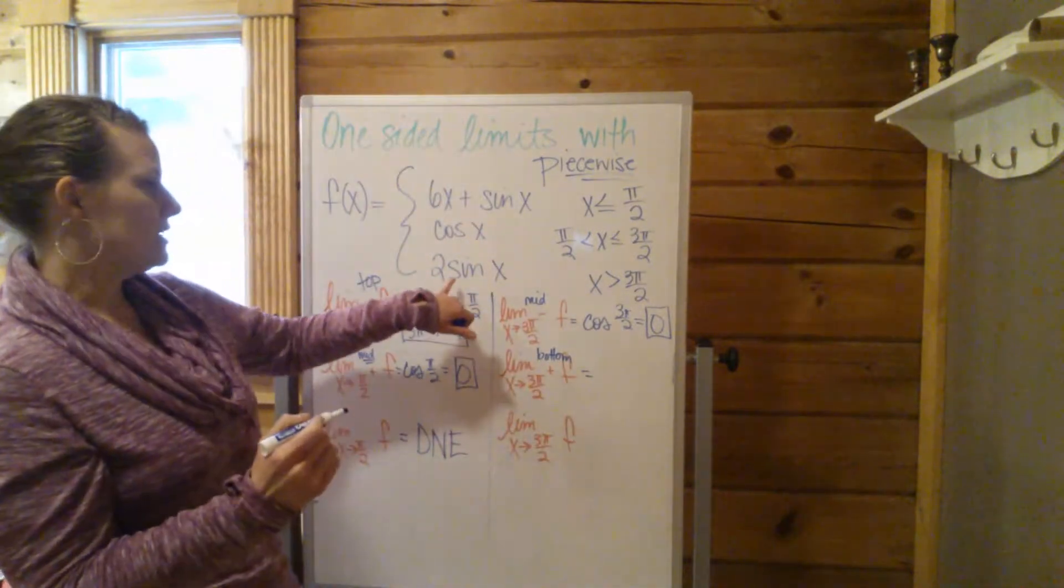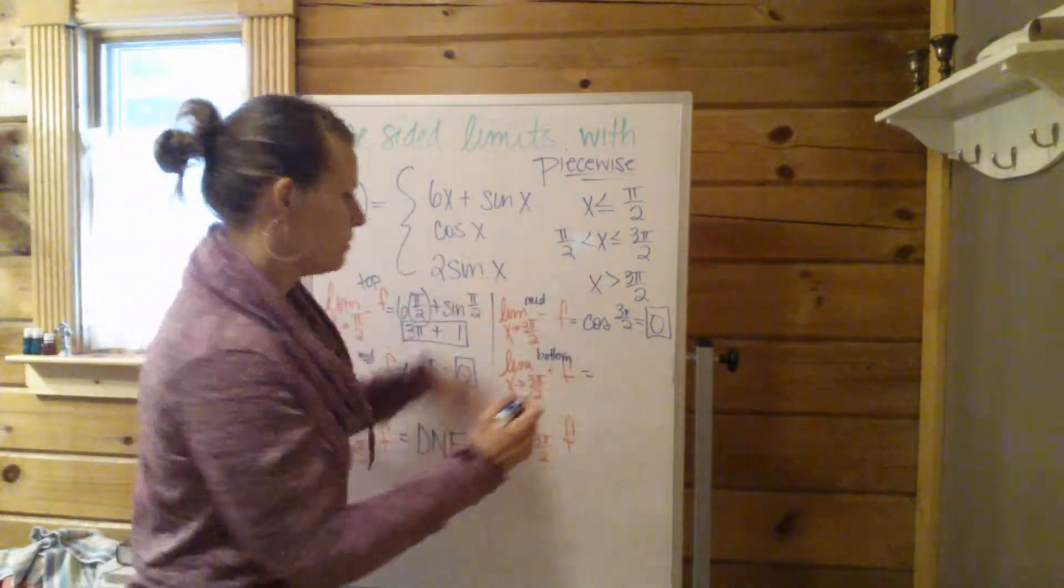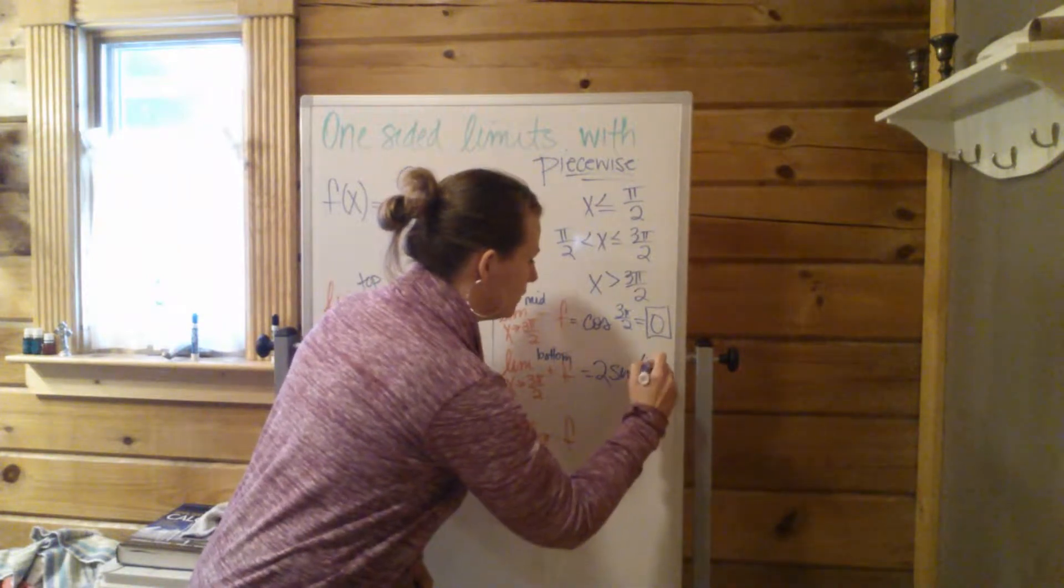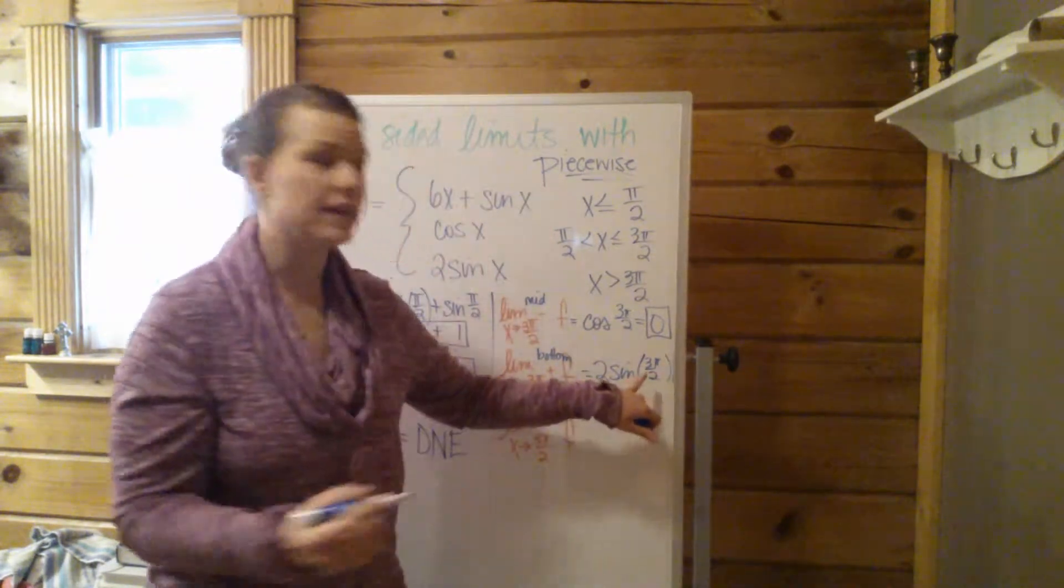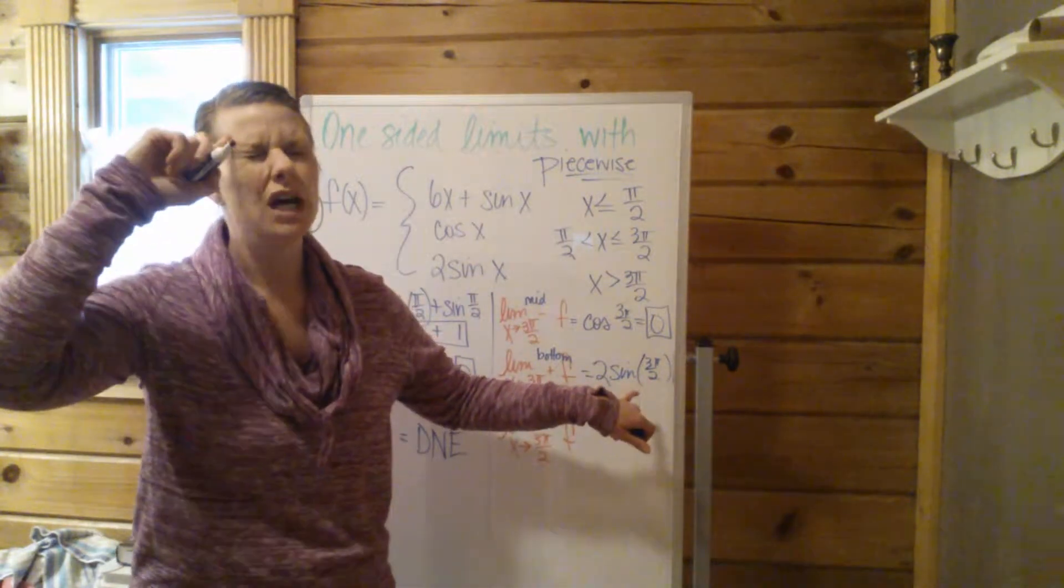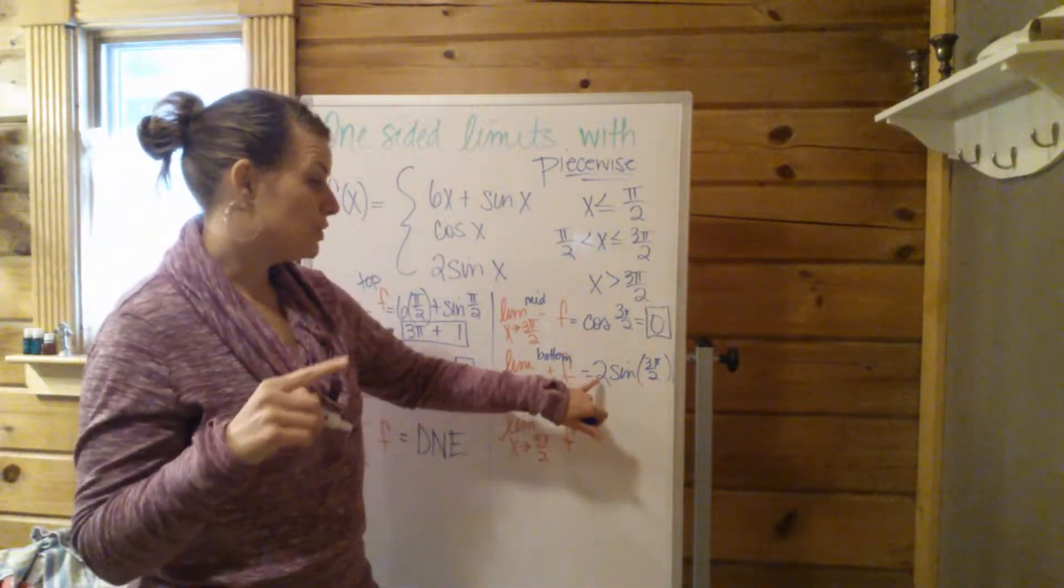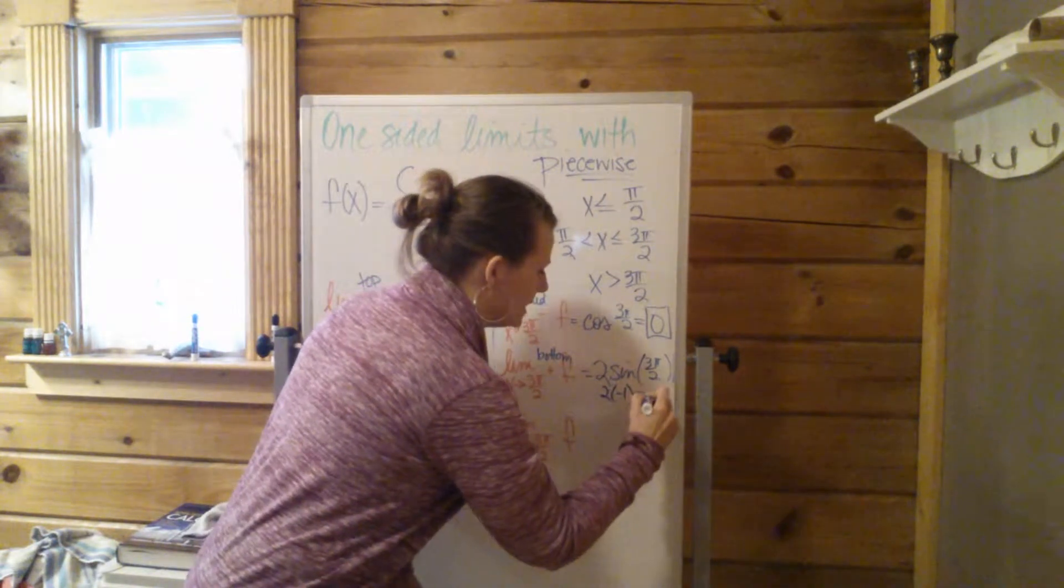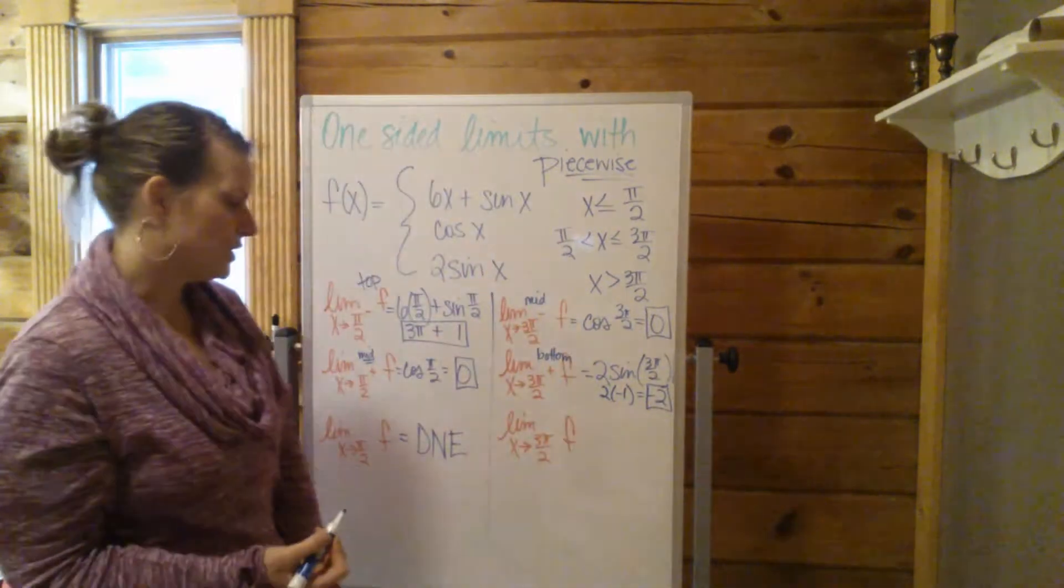So we're going to say 2 sine of 3π/2. 2 sine of 3π/2. Now the sine of 3π/2 unit circle, negative 1. So 2 times negative 1 will be negative 2 for that answer.